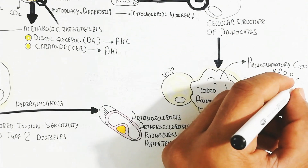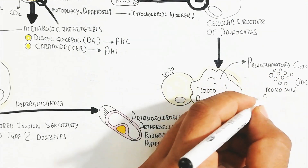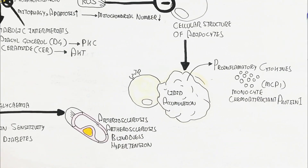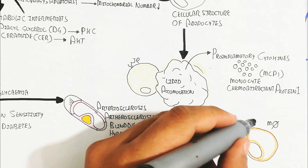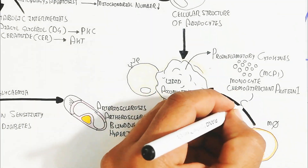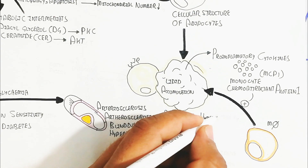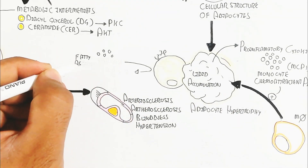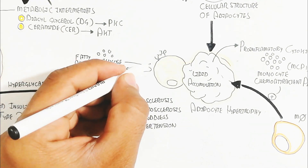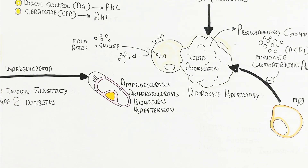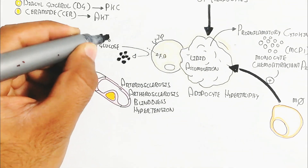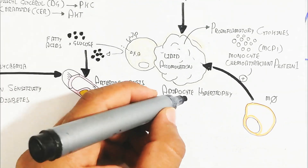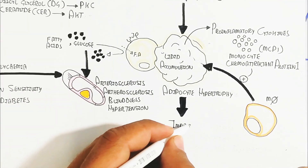When the cellular structure of adipocytes is damaged, it leads to lipid accumulation and production of pro-inflammatory cytokines — specifically monocyte chemoattractant protein-1 (MCP-1). MCP-1 triggers macrophage recruitment, leading to adipocyte hypertrophy as well as lipid clearance. Macrophages accumulate more lipids, increasing low-grade inflammation, while more fatty acids move into the adipocyte and insulin resistance worsens.